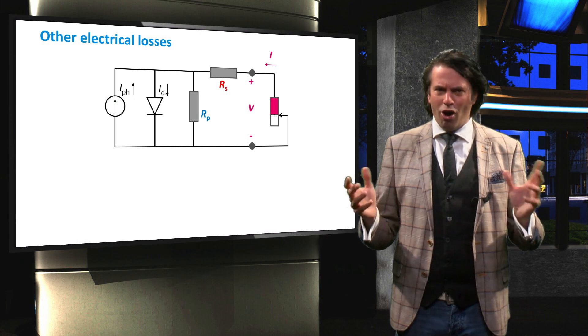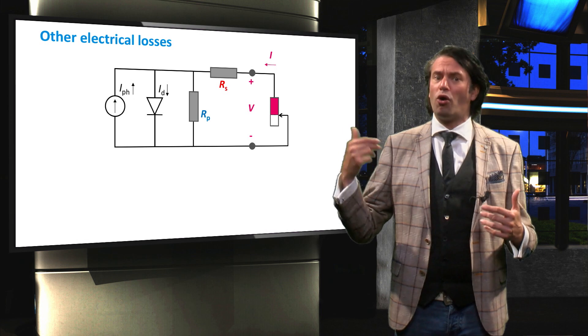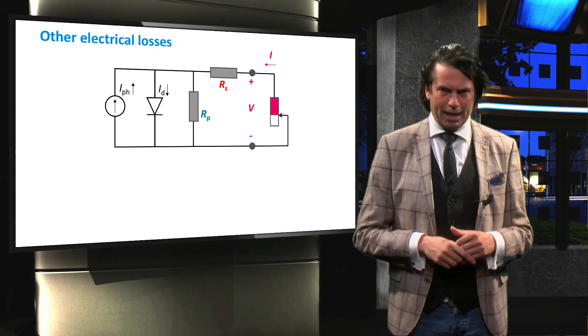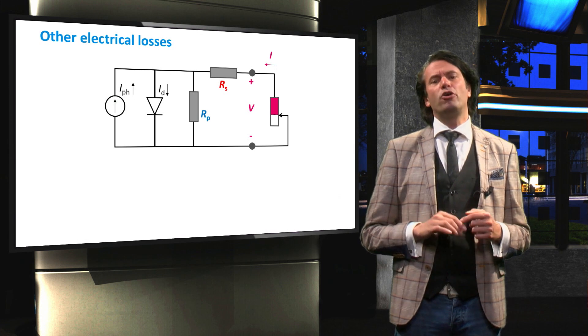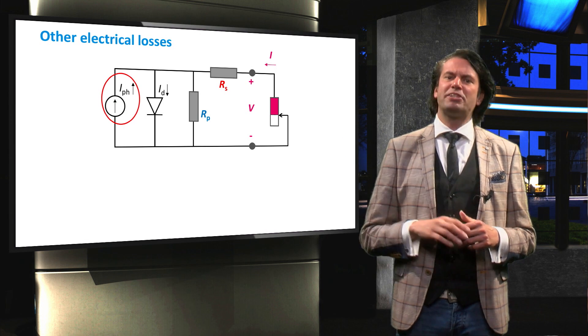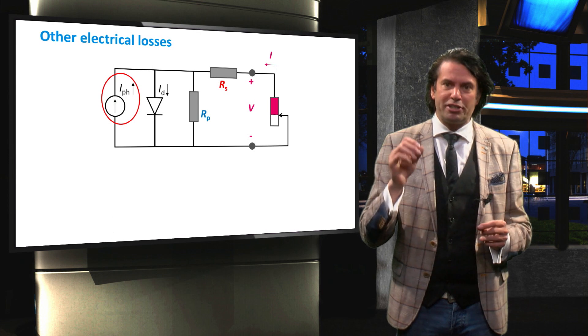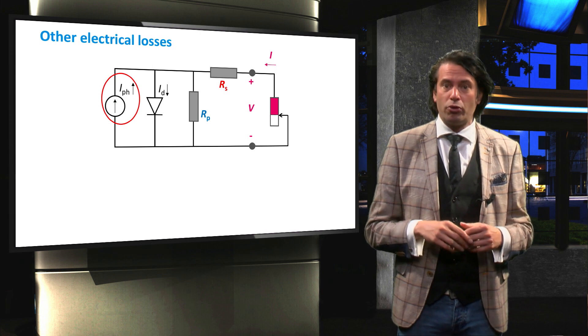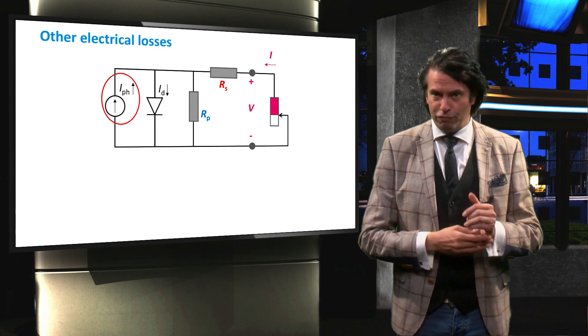There is a lot going on here, so let's move through our schematic step by step. The first thing you may notice is the current source on the left side of the diagram. This represents the photocurrent generated through illumination, which we call here I-photon.